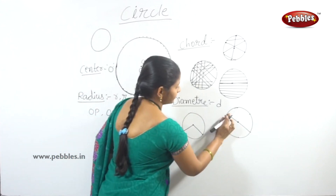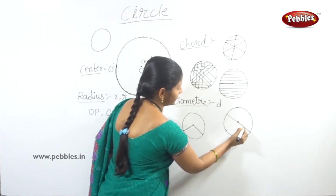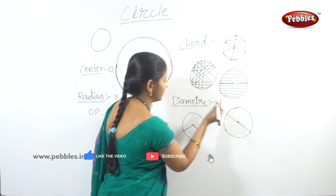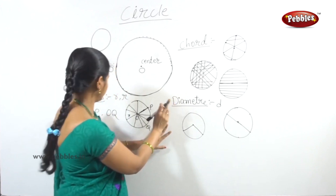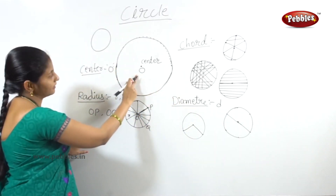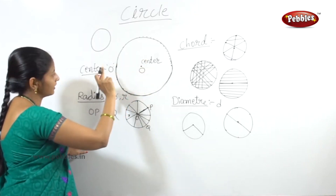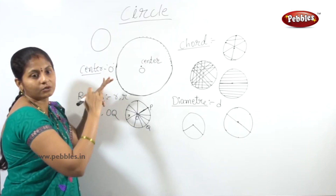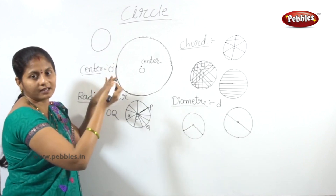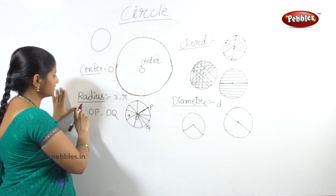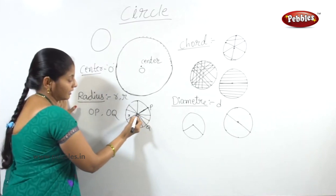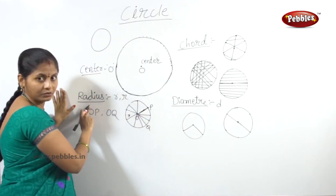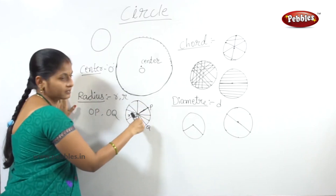The diameter is drawn by placing two opposite points on the circle. If you take two opposite points on the circle, the line through them passing through the center is the diameter. The distance between center and any point on the circle is called radius.